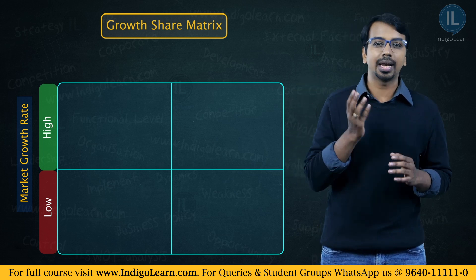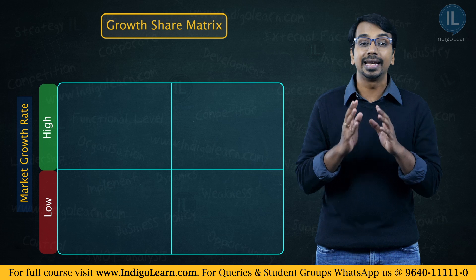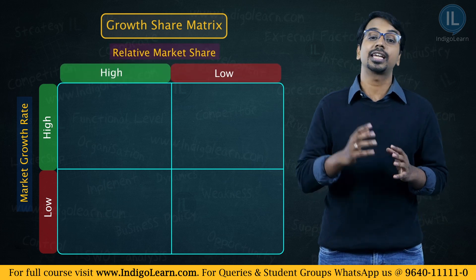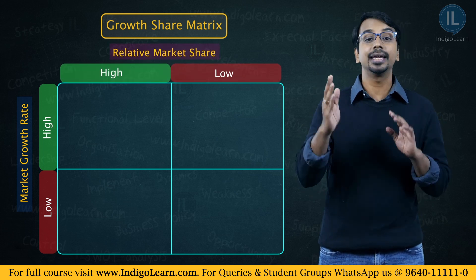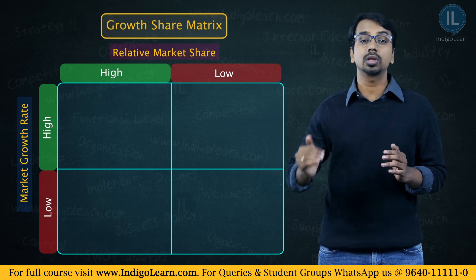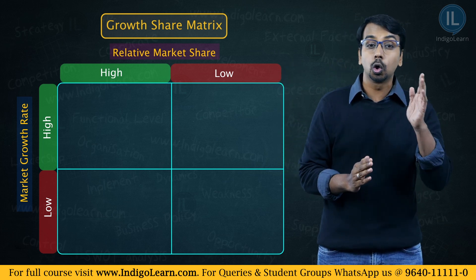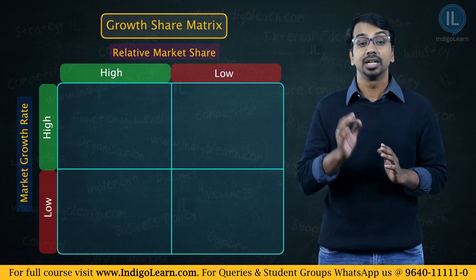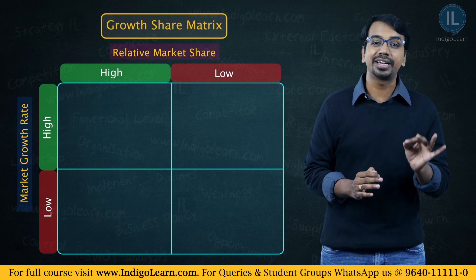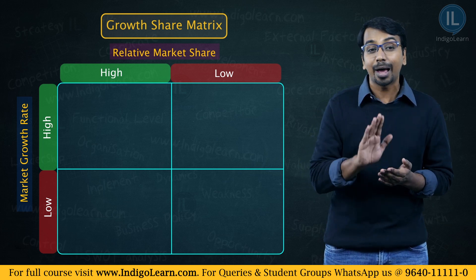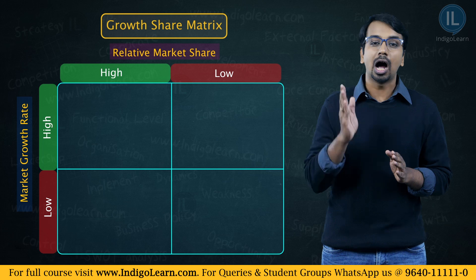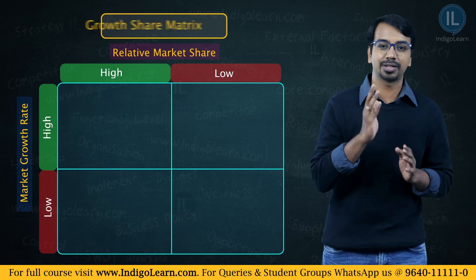On the horizontal axis, we plot something called relative market share. The relative market share can be high or it can be low. So we have high growth, low growth, high relative market share, and low relative market share. Please remember we are using the term relative market share — we are not saying absolute market share. On a relative basis, how is the market share position?